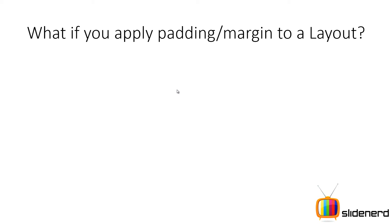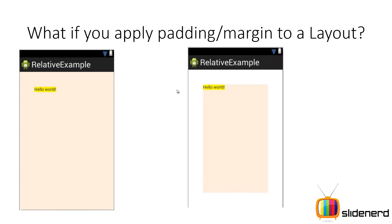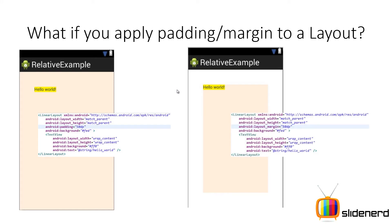So remember: outside the view, it's margin; inside the view, that's padding. Very simple way to remember that. So what happens when you apply padding or a margin to a layout? I have an image over here and another image over here. The code for the left one has a linear layout with a padding of 50dp, and the right one has the same linear layout with a margin of 50dp. When you say padding of 50dp, whatever content this linear layout has is going to be pushed by 50dp inside from all four sides. And when you have a margin of 50dp, the layout itself is going to create a 50dp space around it — that's what margin works like.